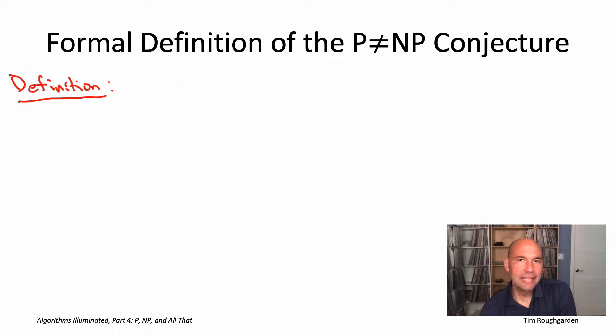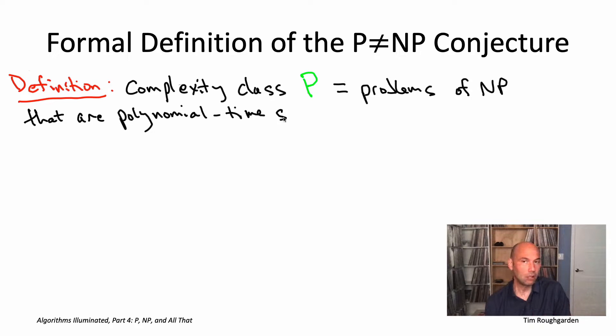We know now exactly what the NP stands for when we talk about the P not equal to NP conjecture. Those are the search problems with efficiently recognizable solutions. What about the P? Well those are just the problems in NP that not only have efficiently recognizable solutions, but can be solved in polynomial time.